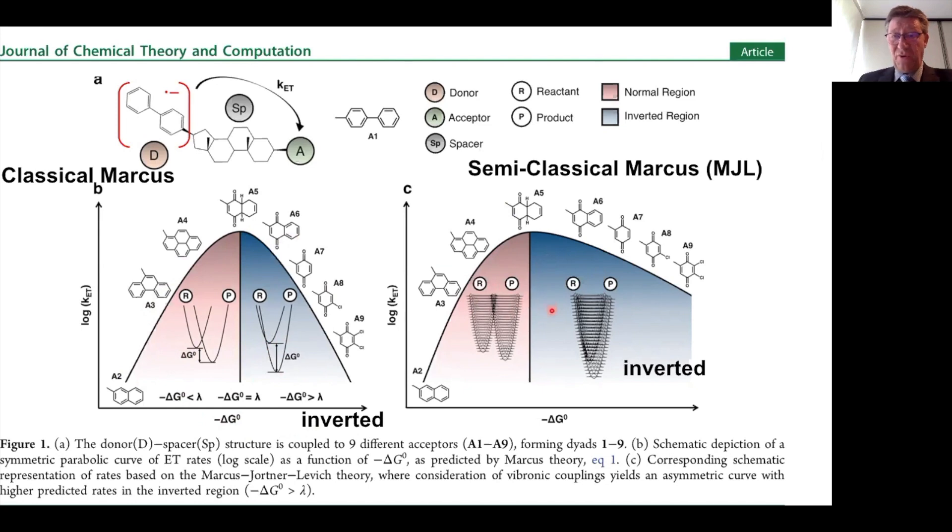This is the classical approach, where we have a classical barrier that we really have to overcome. In the semi-classical approach, this implies the overlap of vibrational wave functions, the Franck-Condon factor. Not only the electronic parts play a role, but also the vibrational parts. The overlap of vibrational wave functions in the inverted region increases and becomes more important, and that makes the rates faster.